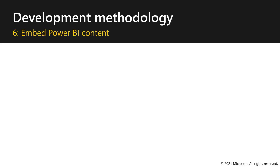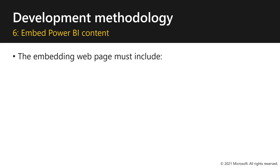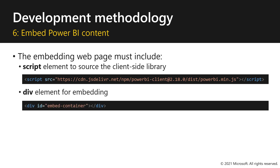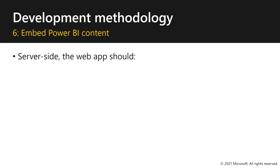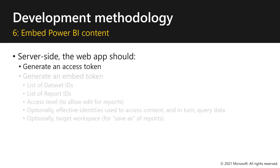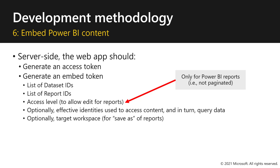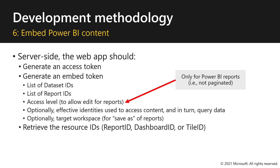Here we are at stage six of the development methodology: embedding Power BI content. The embedding web page must include at minimum two things: the script element to source the client-side library, and the div element in which you'll be embedding. Server side, the web app should generate an access token and an embed token representing dataset IDs and report IDs, access level, optionally effective identities for row-level security, and optionally a target workspace for saving reports. Note that access level only applies to Power BI reports, not paginated reports. Then retrieve the resource IDs — report ID, dashboard ID, or tile ID — and the embed URLs.